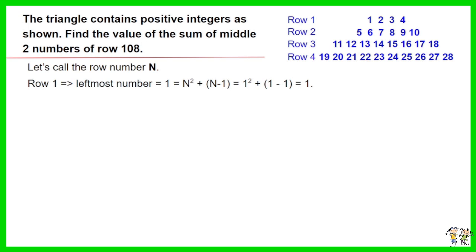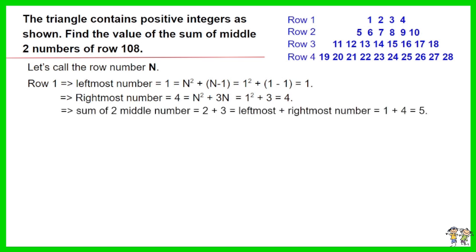The leftmost number of row 1 is 1, which equals n² + n - 1, and the result is 1. The rightmost number of row 1 is 4, which is n² + 3n, equals 1 plus 3, and the result is 4.